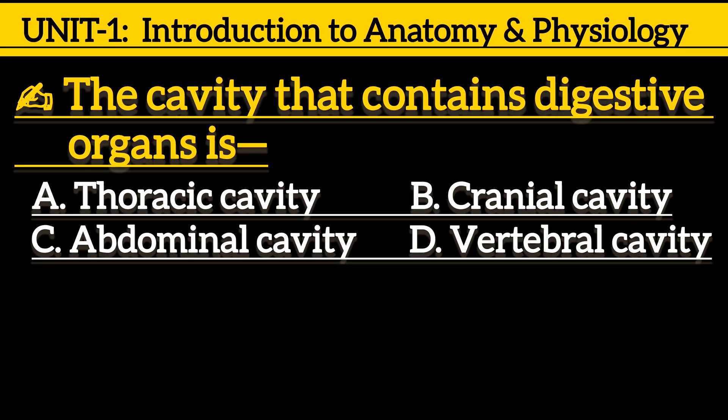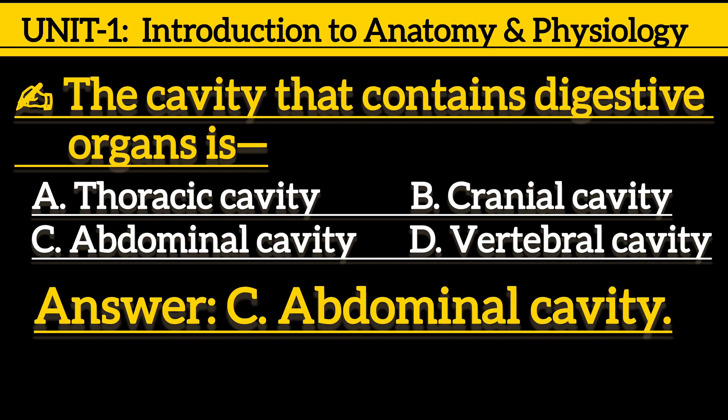First one is, the cavity that contains digestive organs is: option A, thoracic cavity; option B, cranial cavity; option C, abdominal cavity; option D, pelvic cavity. Correct answer is option C, abdominal cavity.